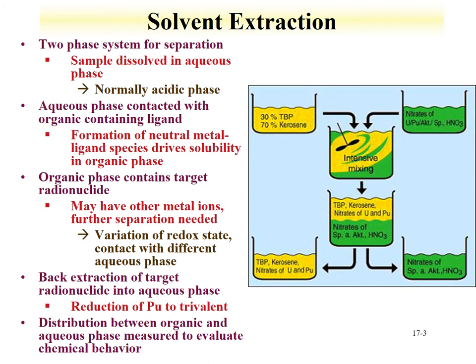The fundamental concepts for solvent extraction involve two phases that are mixed and then allowed to separate. Using the PUREX process as an example, we have tributyl phosphate (TBP) at 30% in kerosene, mixed with a solution of nitrates of uranium, plutonium, and fission products in nitric acid. These are mixed; after mixing stops, the phases separate where the organic phase is lighter and goes to the top, the aqueous phase is heavier and goes to the bottom. The aqueous phase is contacted with the organic phase ligand.